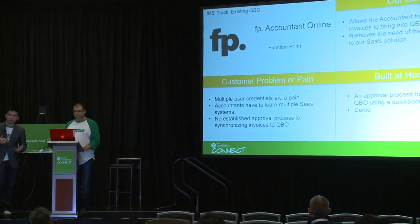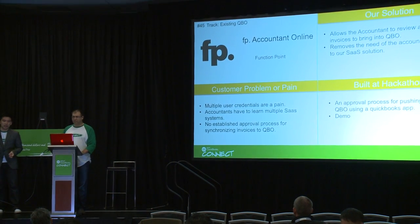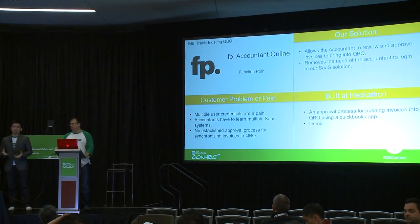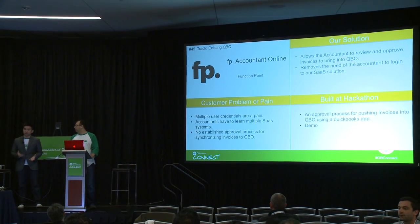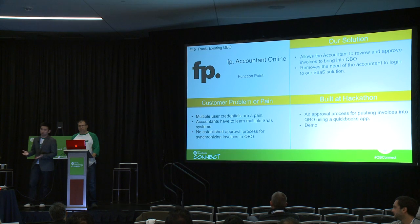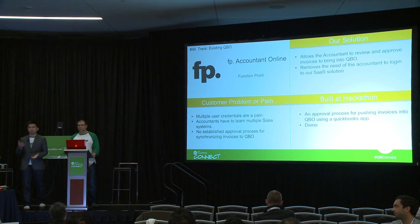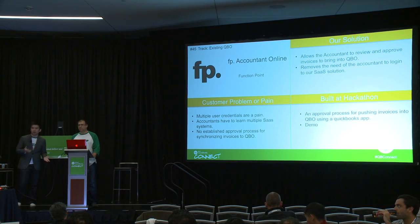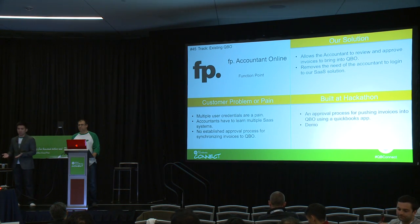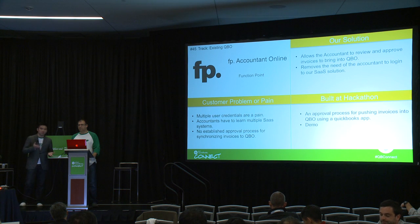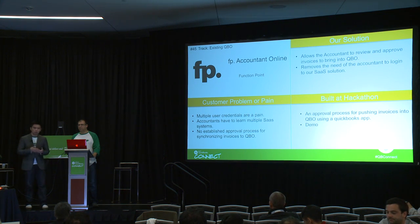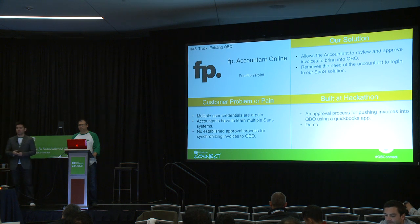What we got from feedback from our clients is that accountants have many SaaS applications to juggle. When an invoice shows up in QuickBooks, they shouldn't have to log back into FunctionPoint to track where that invoice came from or why it showed up. This means they have to juggle multiple logins, and they also don't have a process for approving invoices that are ready for export from our SaaS application.